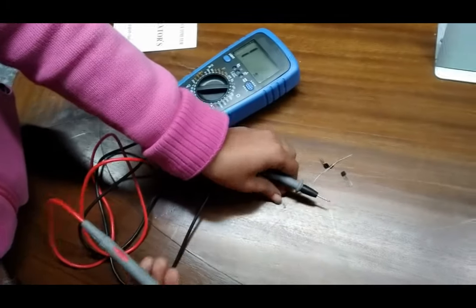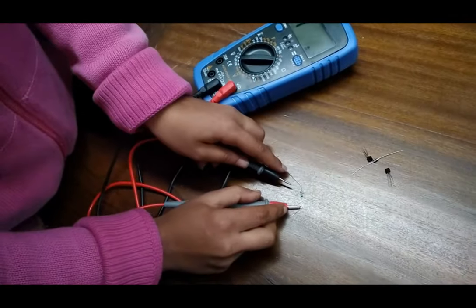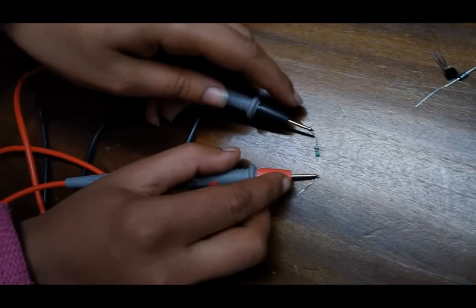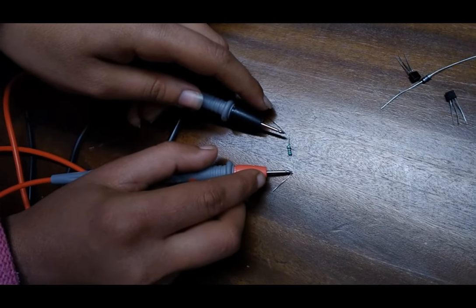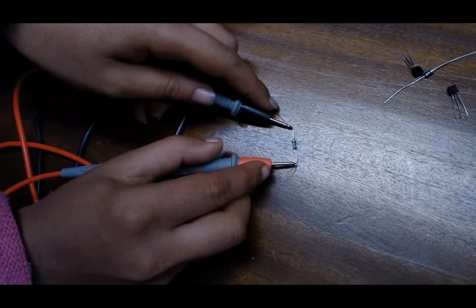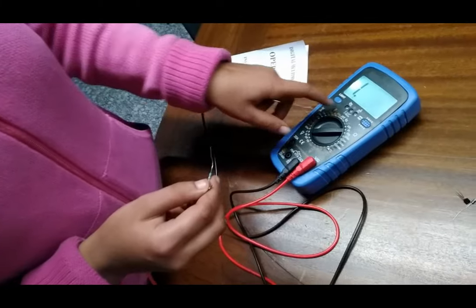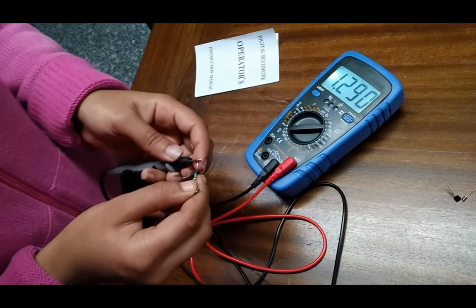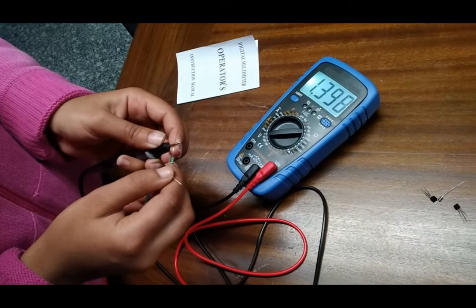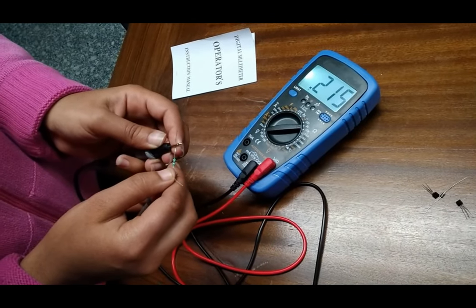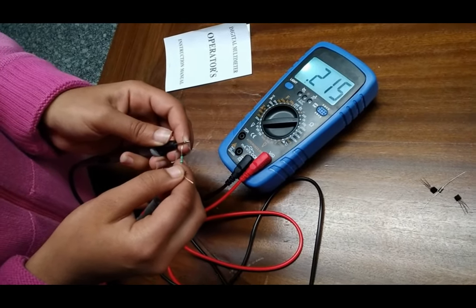Then we are testing our resistor. As we know, resistors have no polarity, so we can check from any terminal. Now observing the value here, the resistor value is approximately 215 ohm.